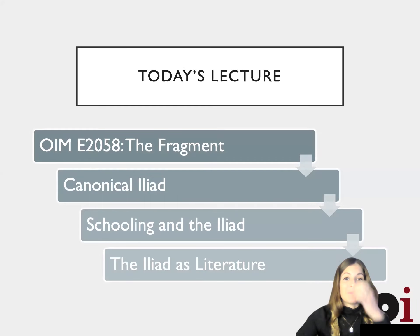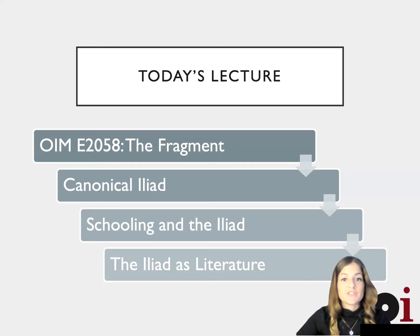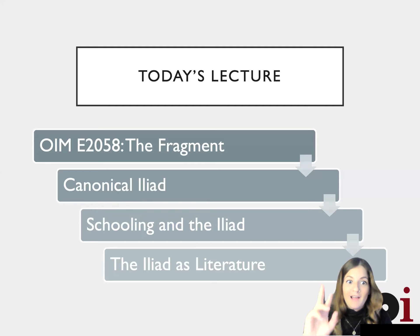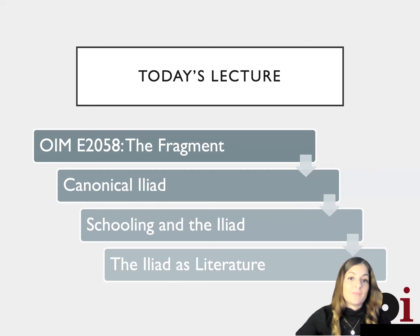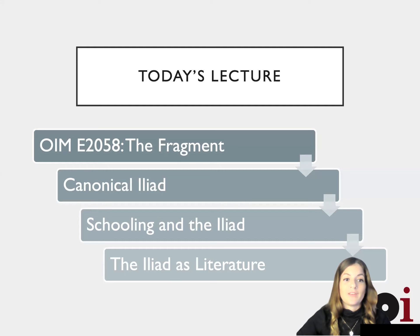Today's lecture will revolve around a particular piece from the Oriental Institute collection, a fragment of Homer's Iliad. I'll be speaking about the fragment itself and how a papyrologist can determine that a fragment is indeed the Iliad, and then go about completing it by comparing it to our known version, which naturally leads us to speak about where our version came from. Since the Iliad was also part of the canonical text learned by scribes, we'll talk about that and then the Iliad as literature, including its role in the famous Library of Alexandria. Lastly, I'll speak about the role of epic poetry in general from the Egyptian perspective.